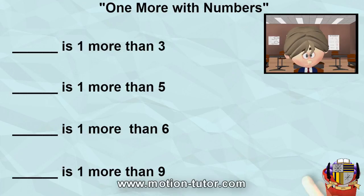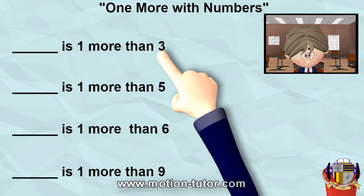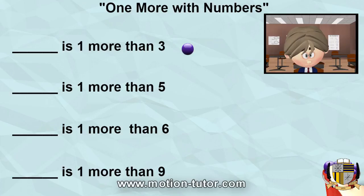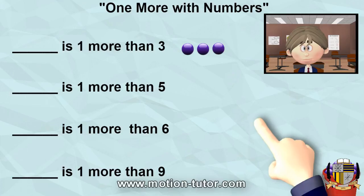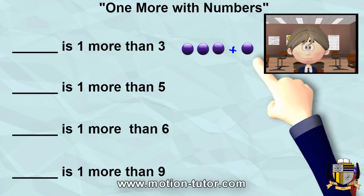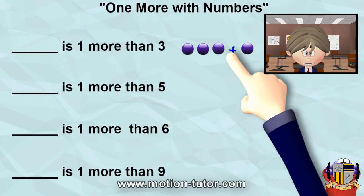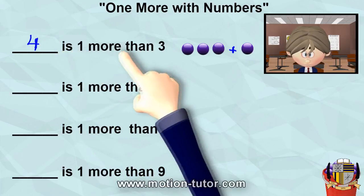Okay, this is saying something is one more than three. Well, I know that three plus one more is going to be one, two, three, four. So that's it — three plus one more is four. So that means four is one more than three.